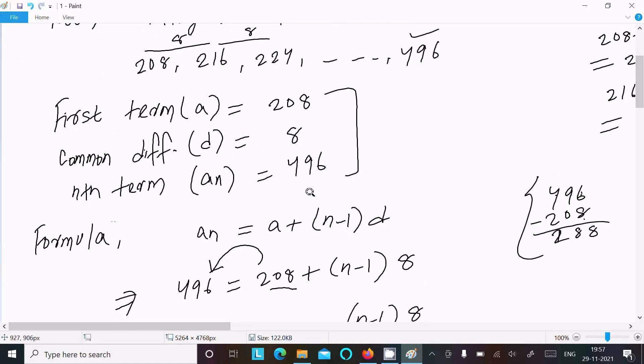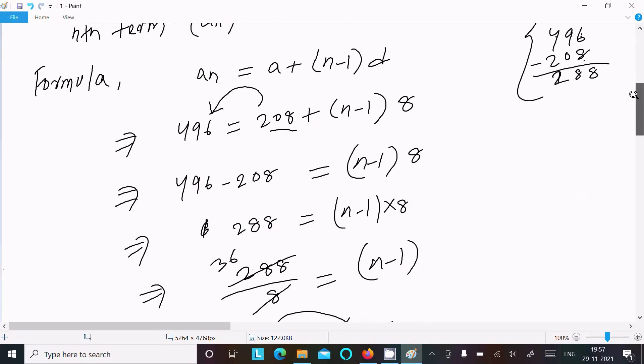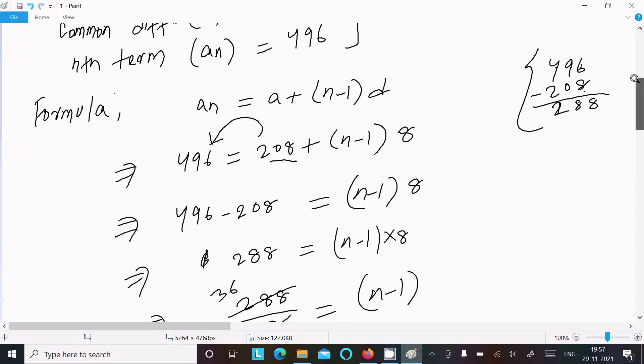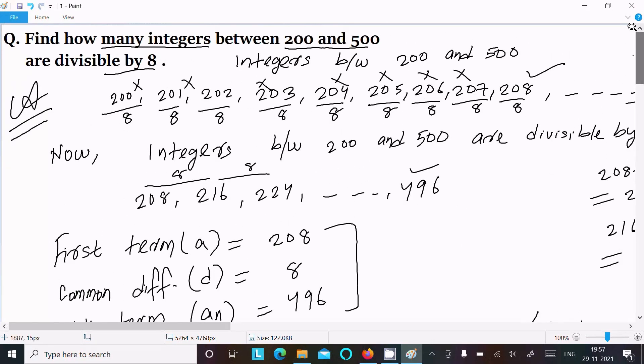So last term, that is nth term, 496. Here a is 208, d is 8. Use the formula, put the value. After doing the calculation, then you can get n value 37. So this is the way we can find.